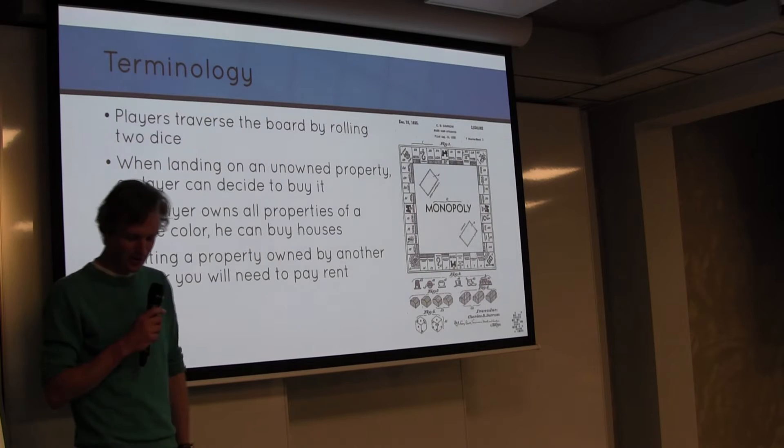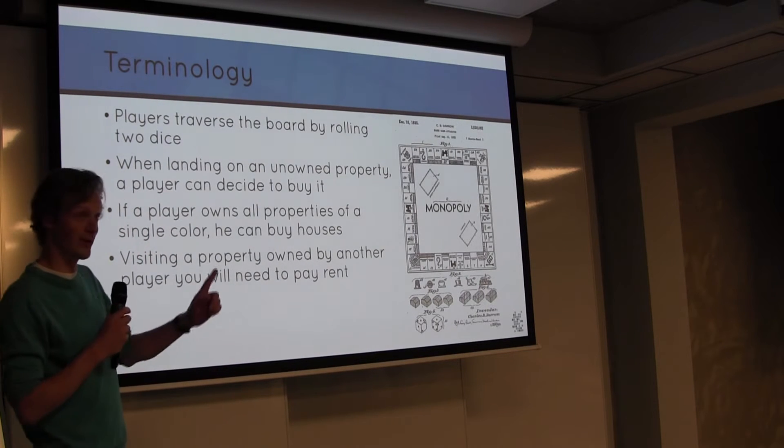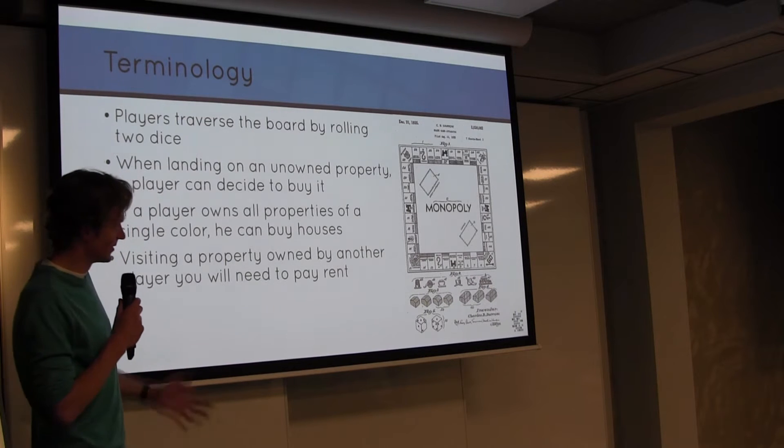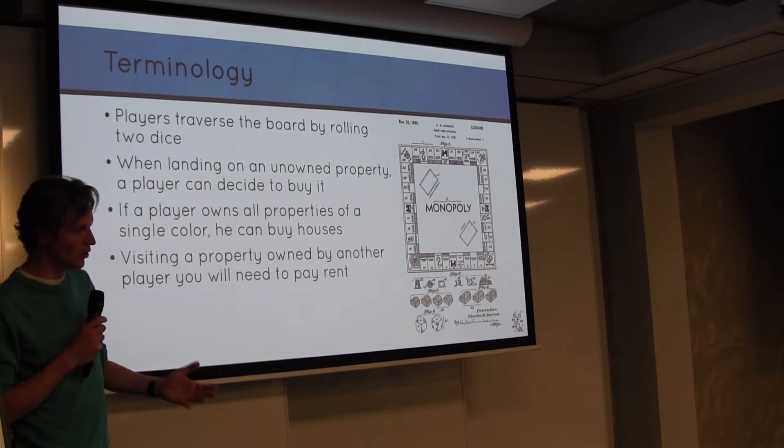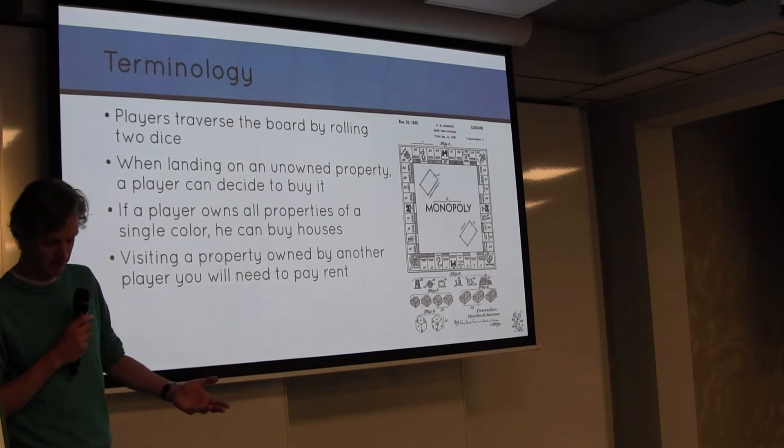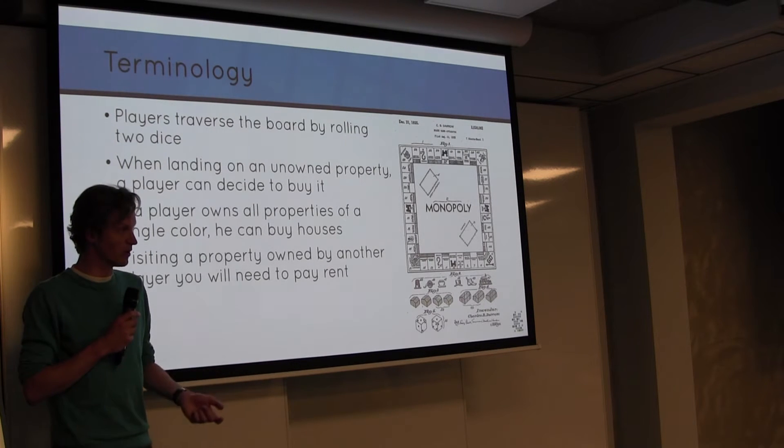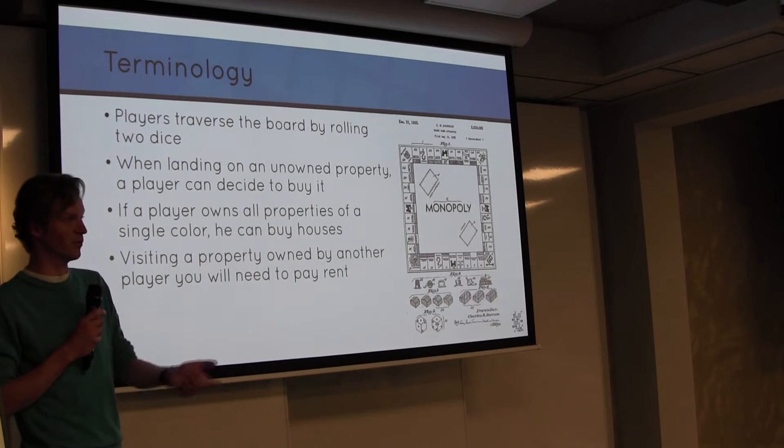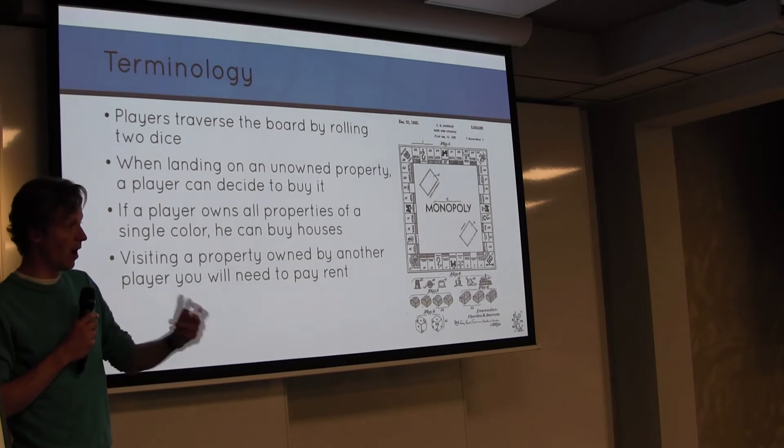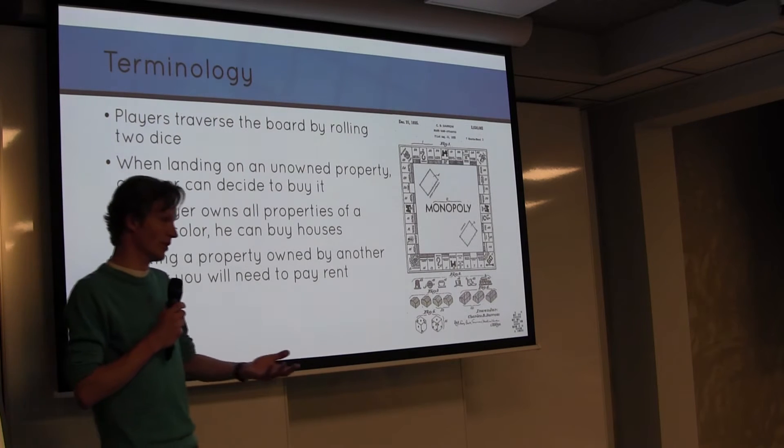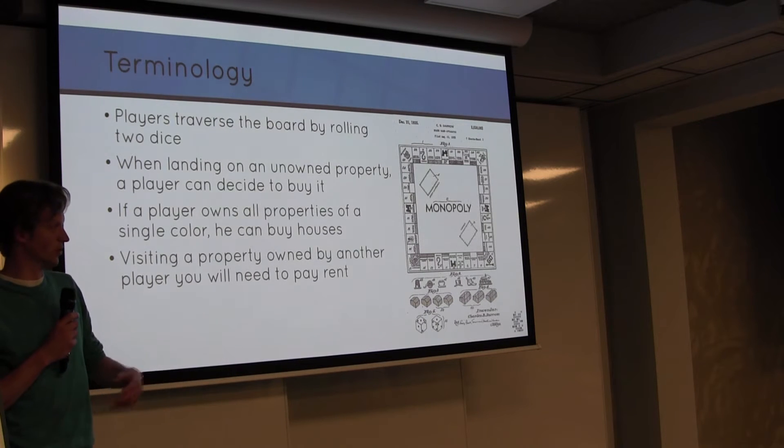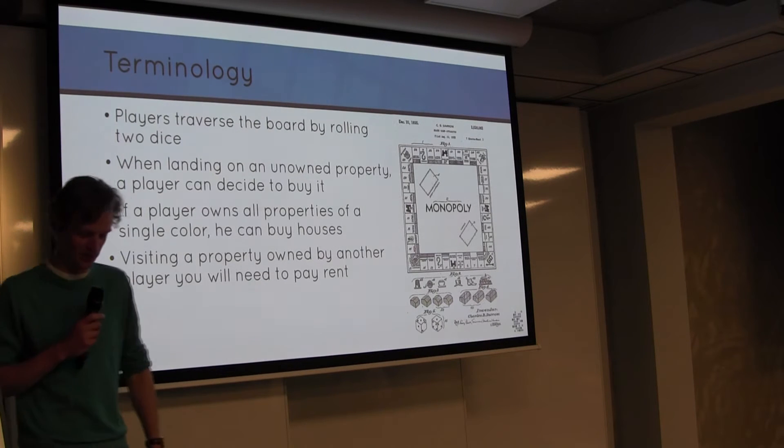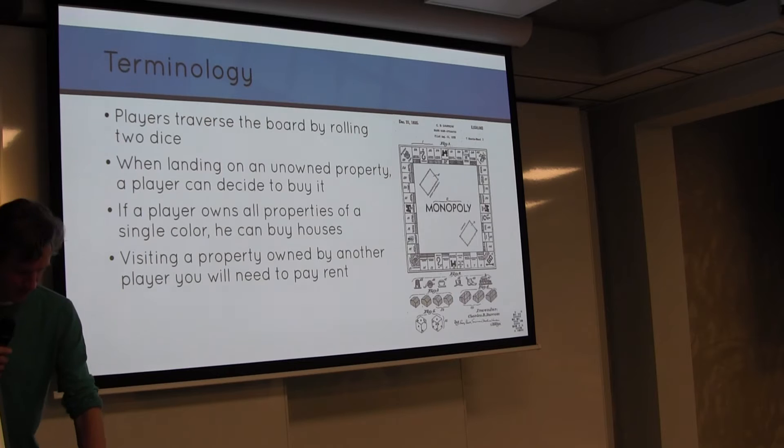Short intro and terminology on the Monopoly game. Basically you have players who traverse the board by rolling two dice, and when they land on an unowned property they can decide to buy it. If you own all the properties of a single color, the properties have colors, basically groups of two and three, you can buy houses. And if you buy five houses, or attempt to buy five houses, you get a hotel. Basically the rent which another player needs to pay when he lands on such a street increases by the number of houses you put on the street.